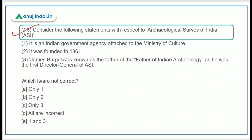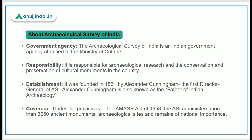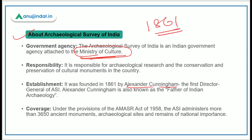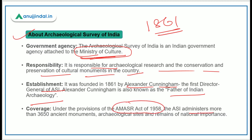Question number 3 is about the basic facts of ASI. We have to find the incorrect statement with respect to the Archaeological Survey of India. It is a government agency — specifically an attached office — under the Ministry of Culture. It was founded in 1861 by Alexander Cunningham, who is known as the father of Indian archaeology, and is responsible for archaeological research and conservation of cultural monuments. Under the Ancient Monuments Act, the ASI administers more than 3,650 monuments, archaeological sites, and remains of national importance.